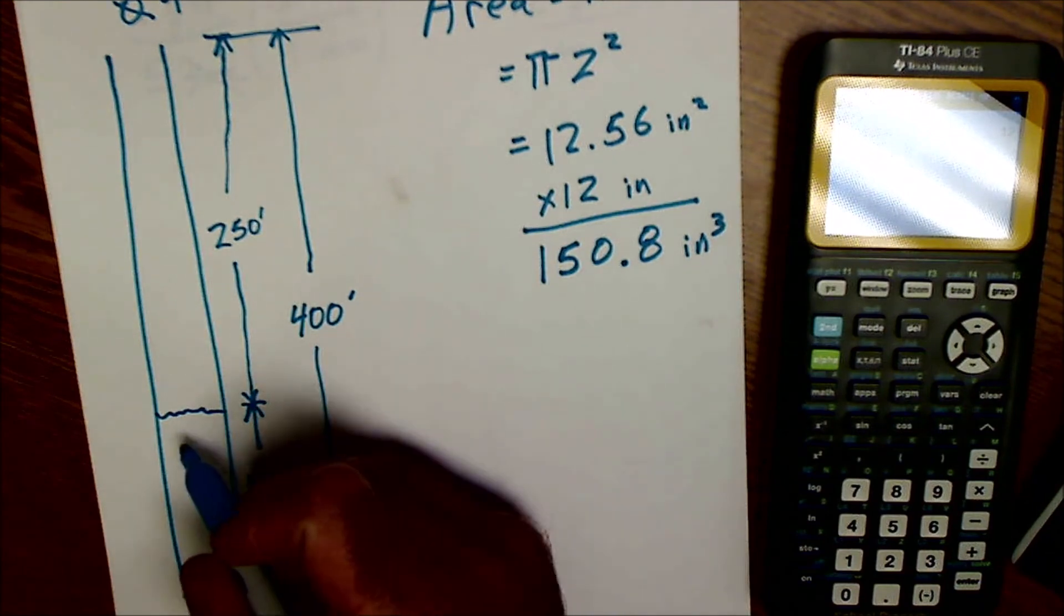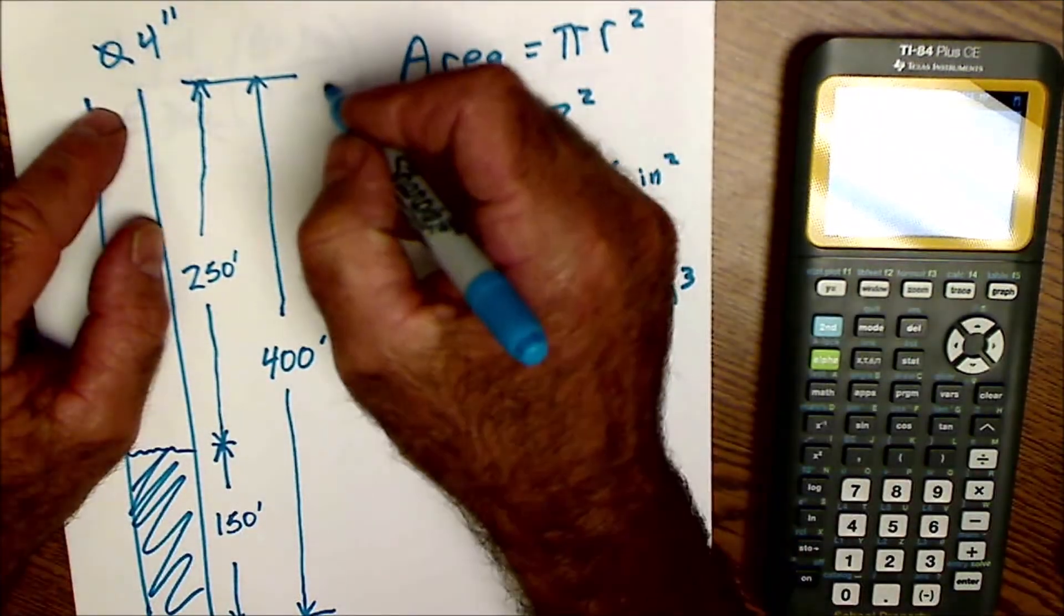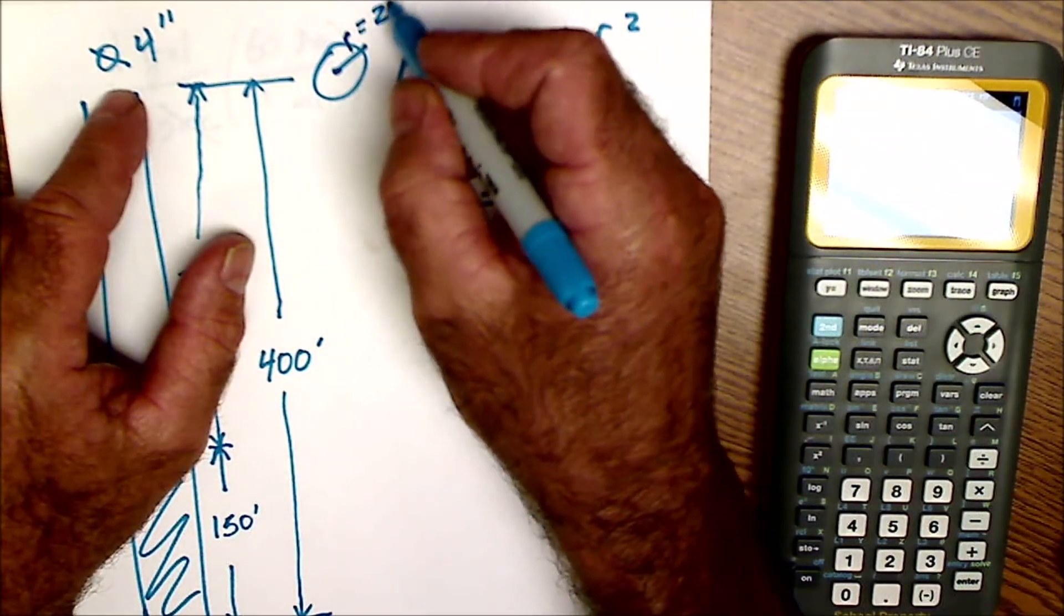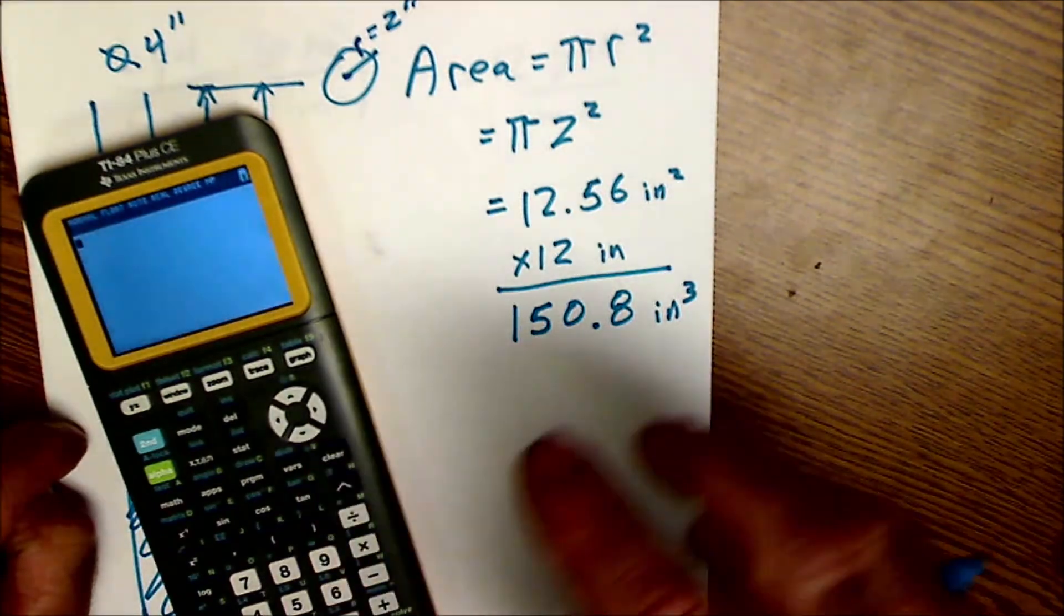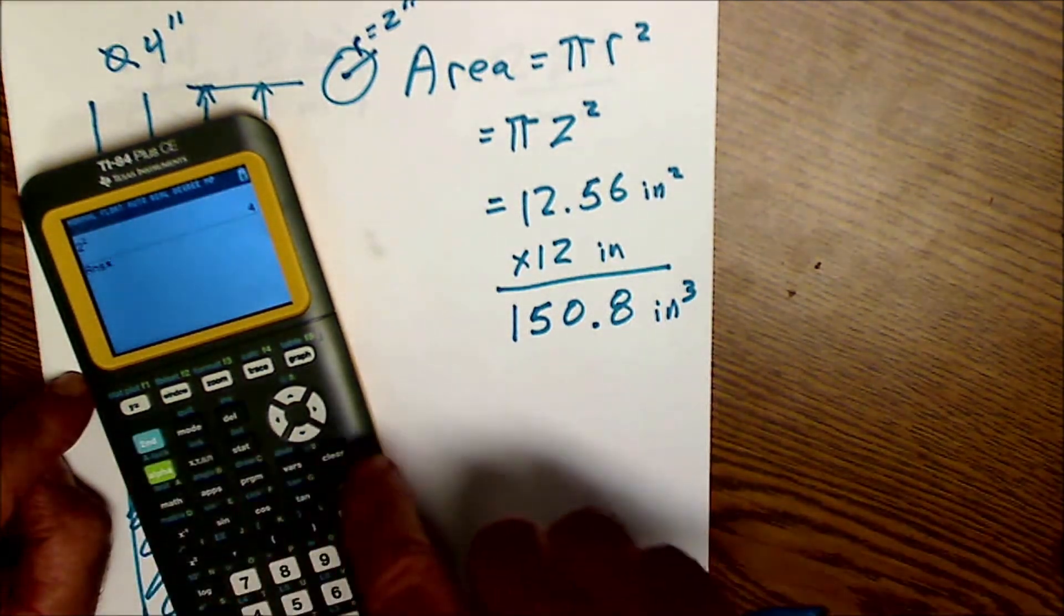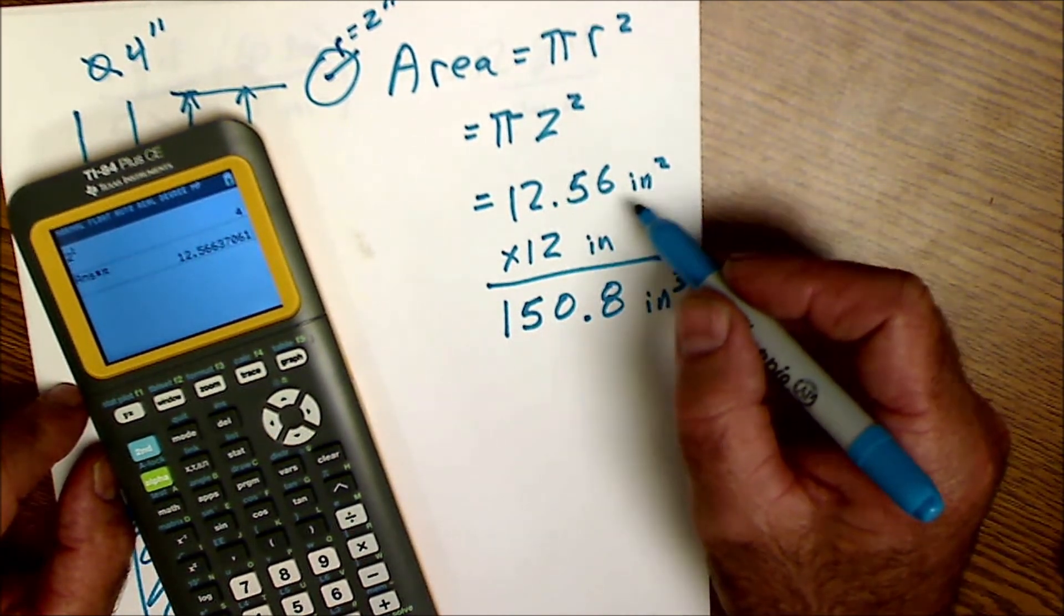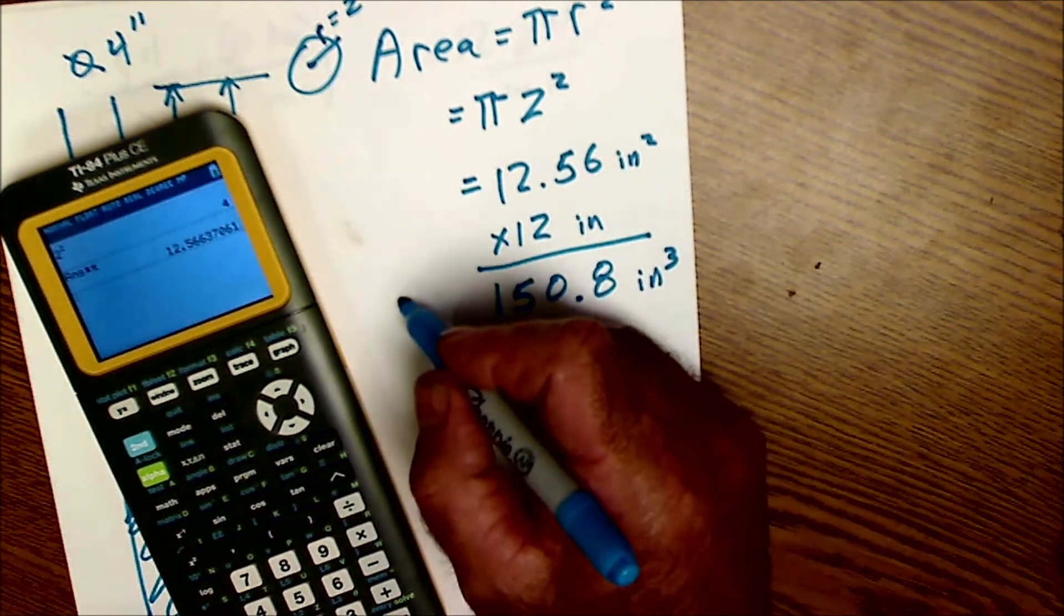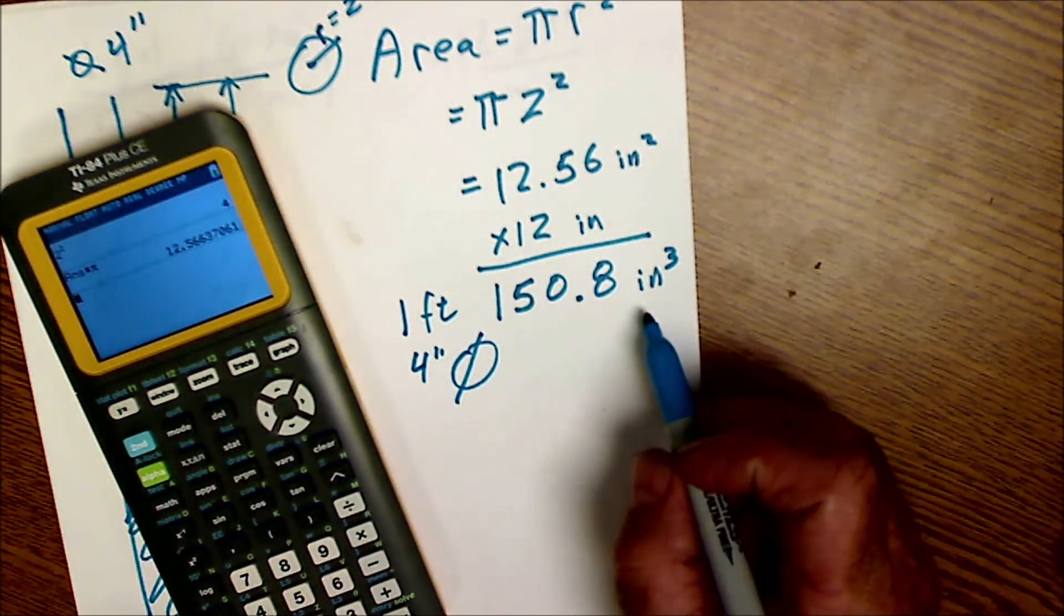I'm going to figure out how many gallons of water this right here is. So this is a four-inch diameter pipe. Area of a circle is pi r squared. R is radius. If the diameter is 4, the radius is equal to 2 inches. So I go 2 squared times pi. On my calculator, you've got to do the exponents first. So you go 2 squared 4 times, here's the pi key right there, times pi, and you get 12.56 square inches. So you've got square inches, and then a foot of pipe is 12 inches long. So I take that number and multiply it by 12 inches, and one foot of 4-inch diameter pipe has 150.8 cubic inches in it.